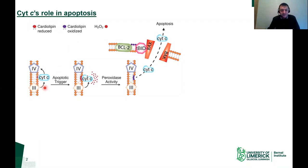During cell death, an apoptotic trigger is sent. This causes a rearrangement of the inner mitochondrial membrane, where you get an increase of cardiolipin in its reduced form in the membrane. Reduced cardiolipin is anionic, and this anionic cardiolipin interacts with positively charged cytochrome C.